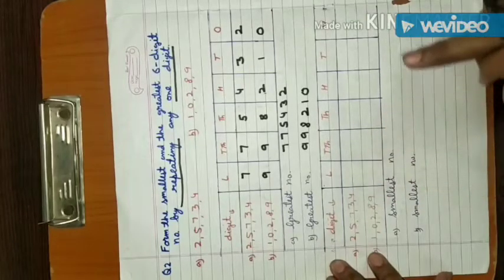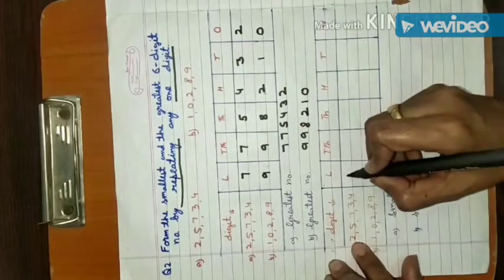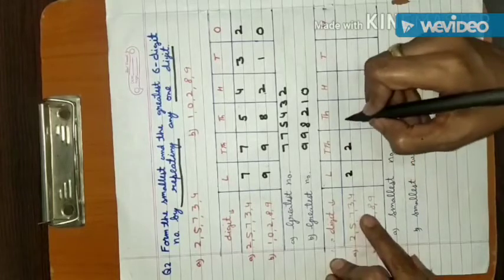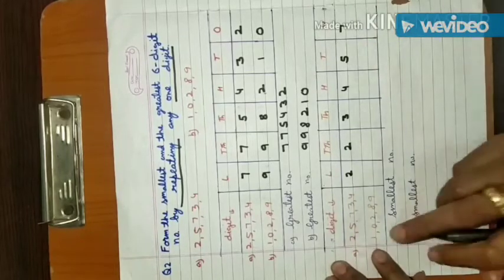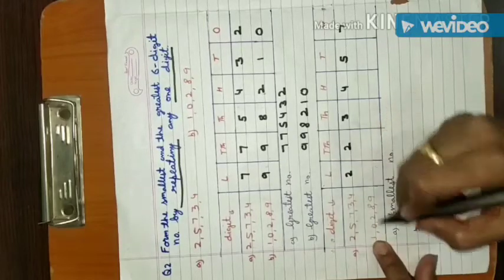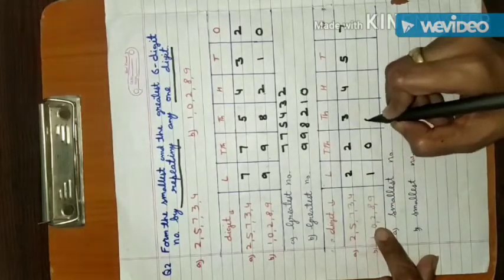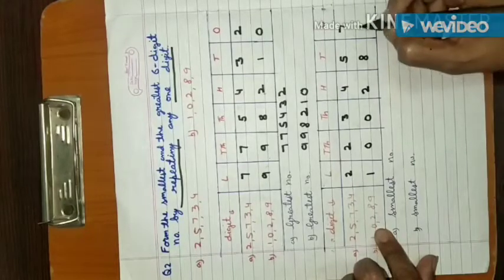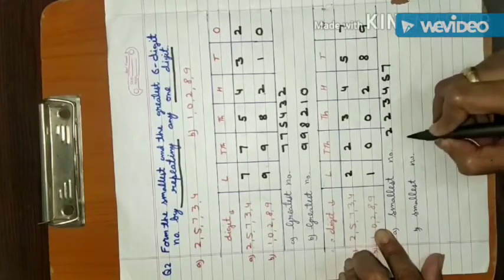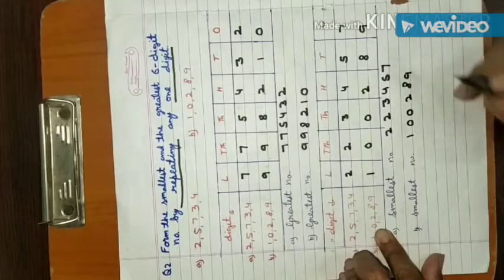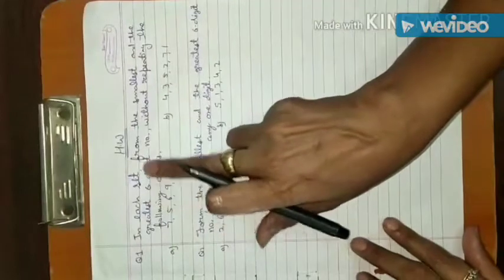Now find the smallest number by arranging in ascending order. For set one, the smallest digit is 2, so repeat 2 two times: 2, 2, 3, 4, 5, 7. For set two, the smallest digit is 0, but we cannot start with 0, so first write 1, then repeat 0 two times: 1, 0, 0, 2, 8, 9. So the smallest number for set one is 223457 and for set two is 100289.